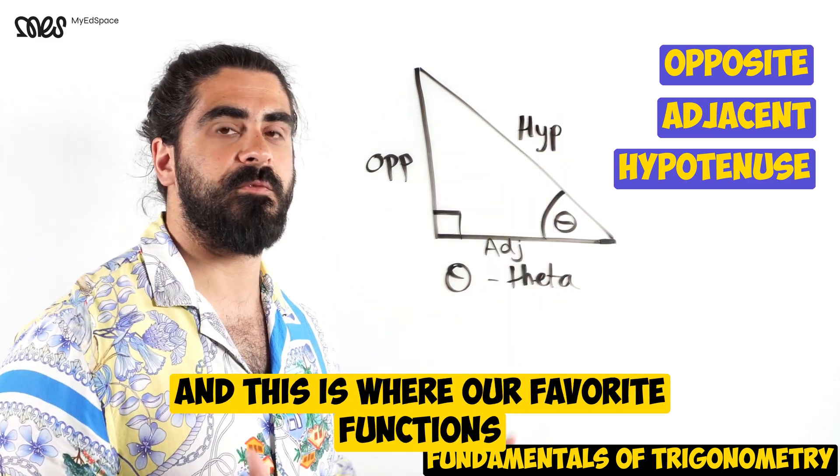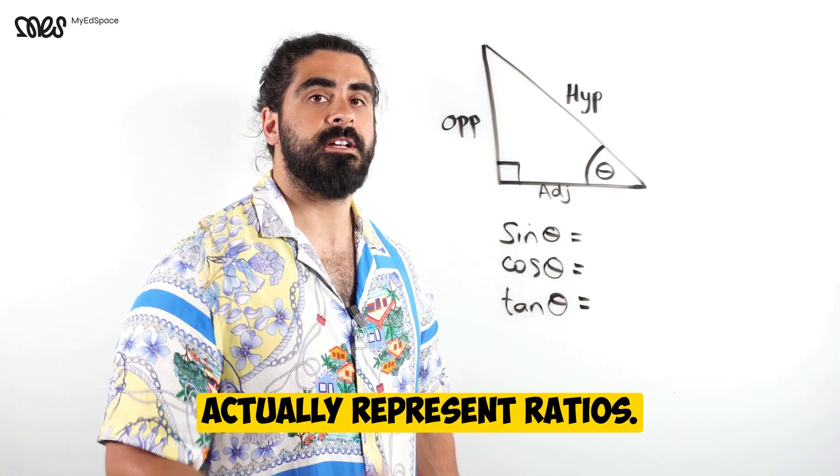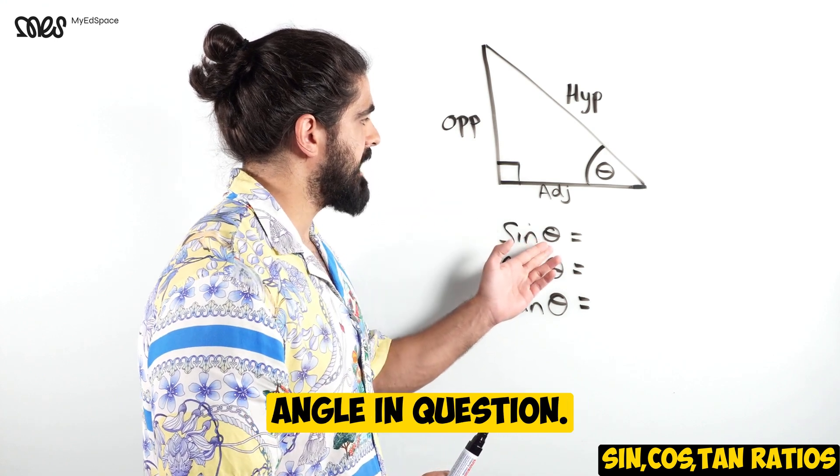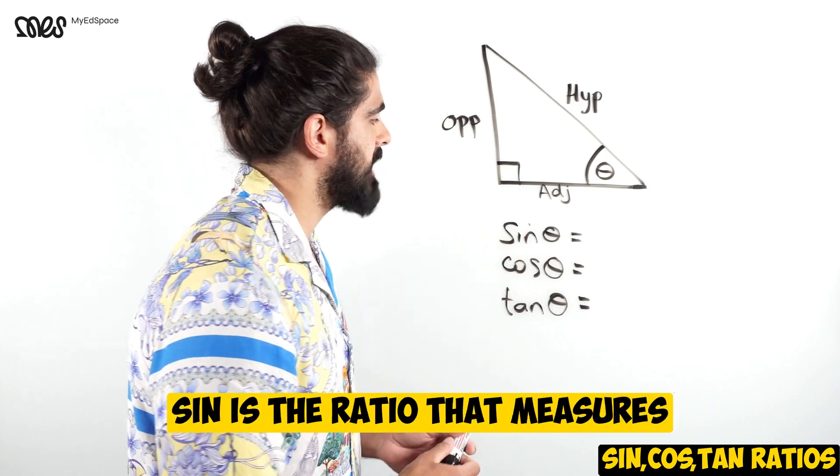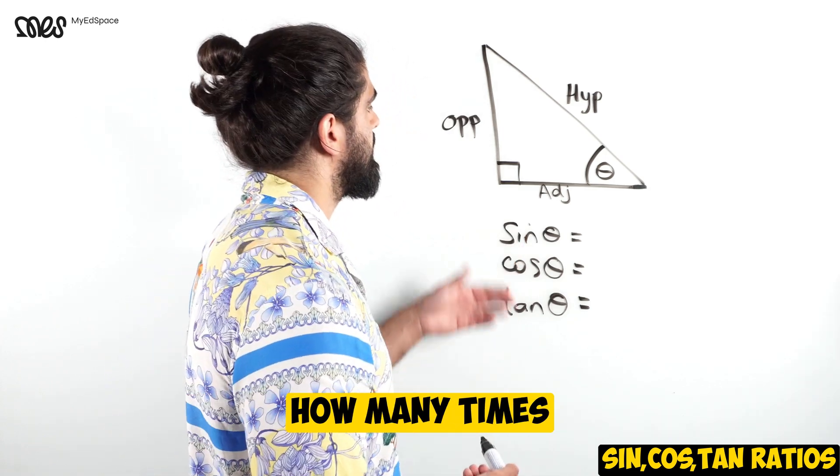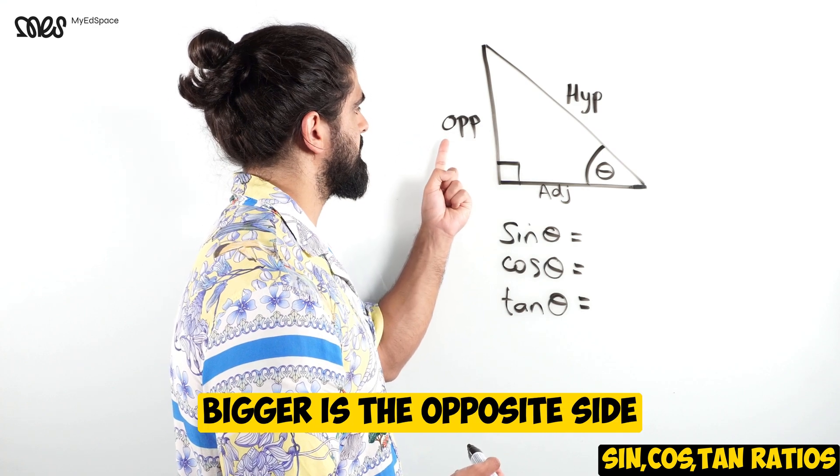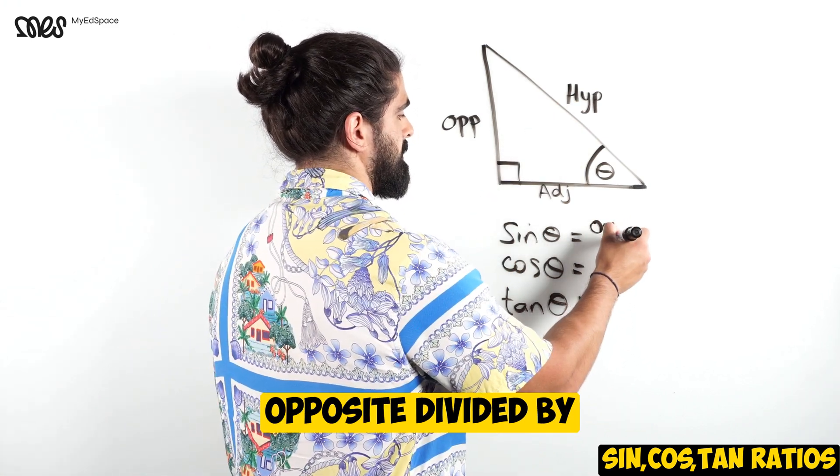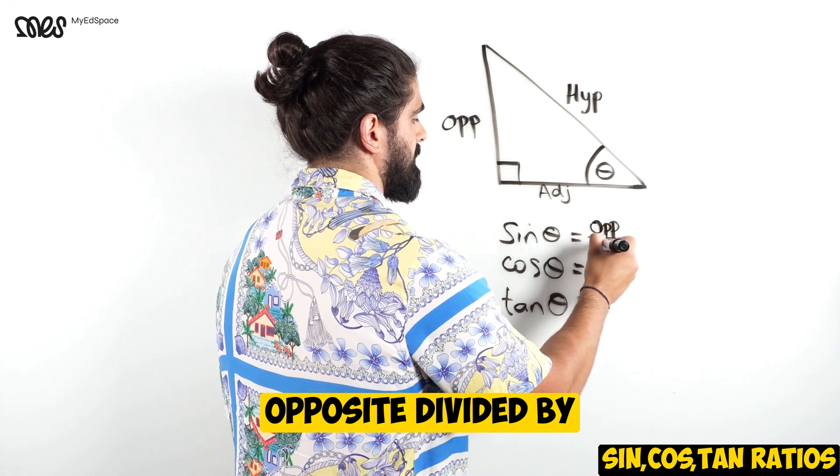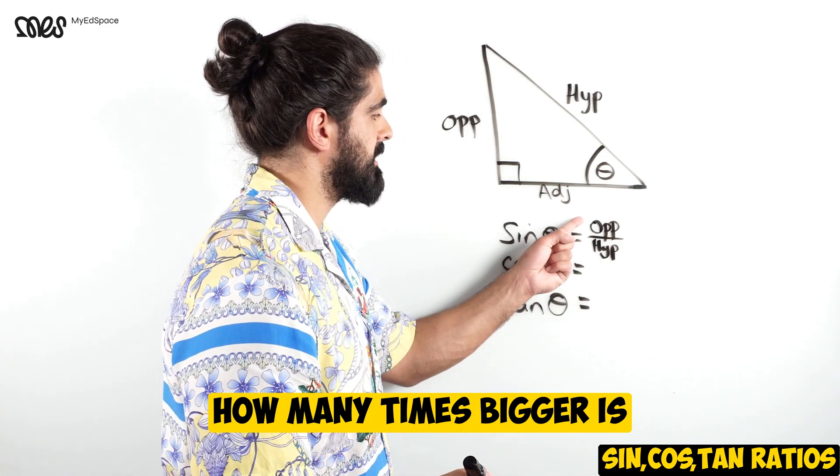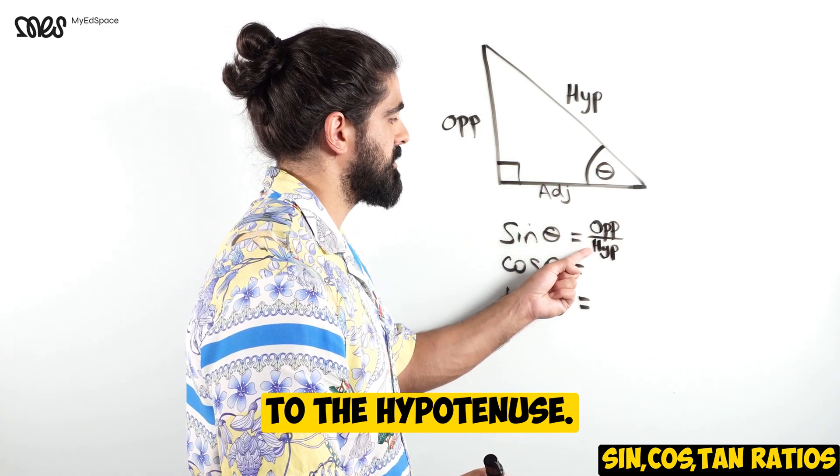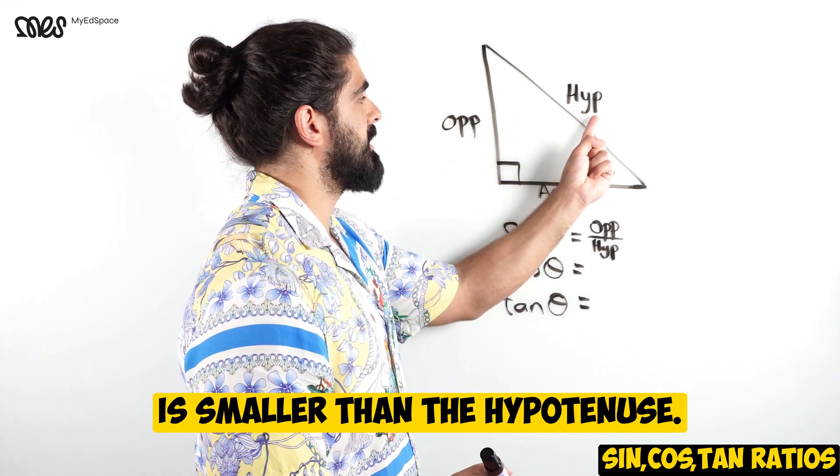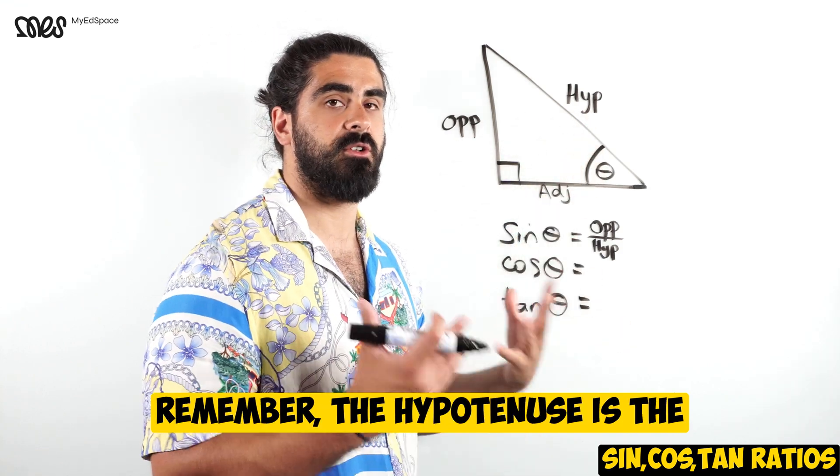And this is where our favorite functions of sine, cos and tan come in. Sine, cos and tan actually represent ratios. Sine of the angle in question measures how many times bigger is the opposite side relative to the hypotenuse - opposite divided by the hypotenuse. This value will always be less than one because the opposite side is smaller than the hypotenuse.